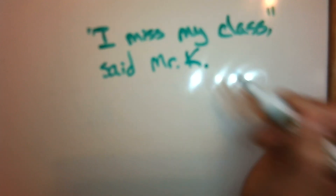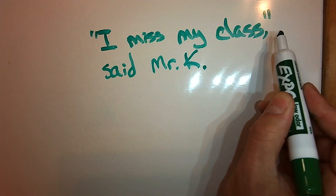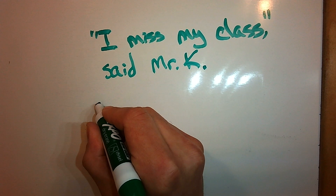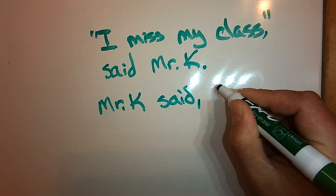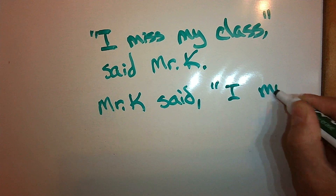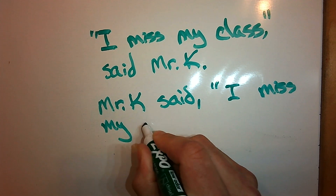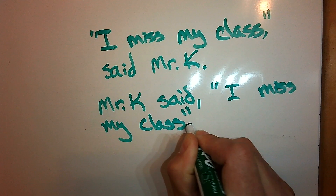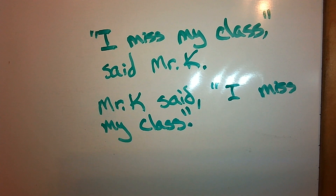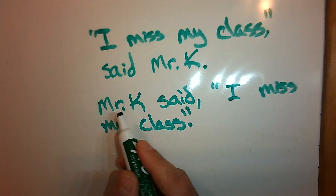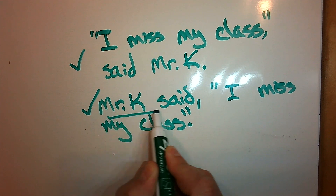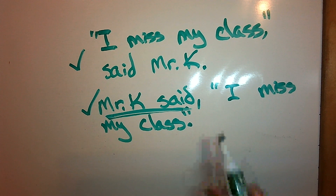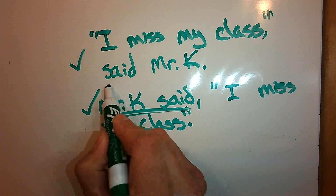Notice the capital letter at the beginning, the period at the end, and then the quotation marks show the character is talking: 'I miss my class.' The other way you can write it is putting the attribution first. Mr. K said, then we put our quote, 'I miss my class,' and our period. Either way is correct. You can have the person who's talking come first and then put your quote, or you can start with your quote and then say who said it after.